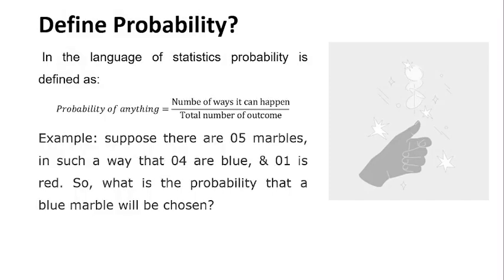In the language of statistics, a probability is defined as the probability of an event, which equals the number of ways it can happen over the total number of outcomes. For example, suppose there are five marbles.